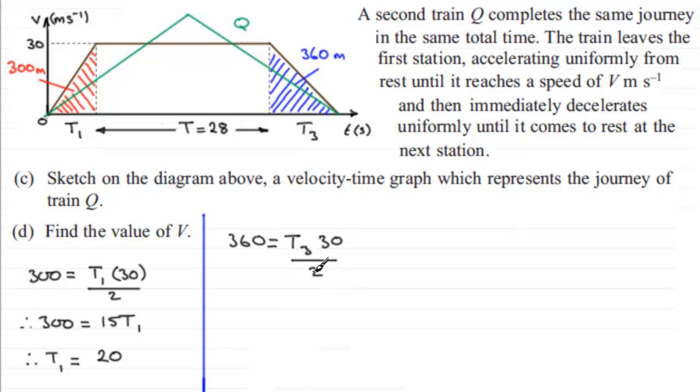So 2 into 30 is 15, and so you've got 15 T3 equals 360. And if I divide both sides by 15, T3 turns out to be 360 divided by 15, which is 24.